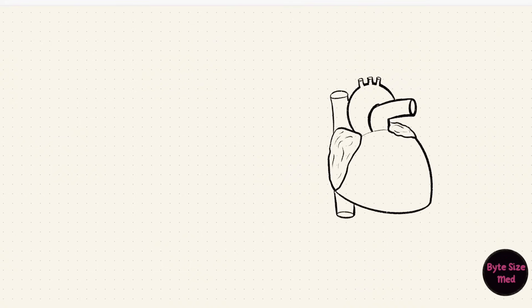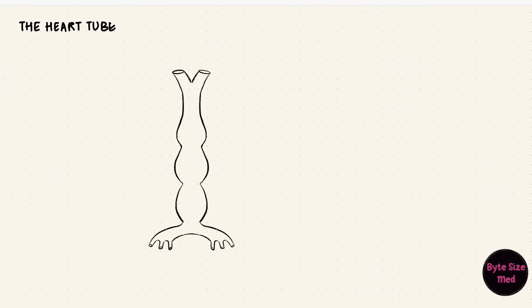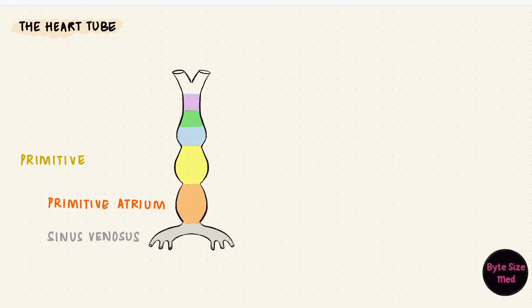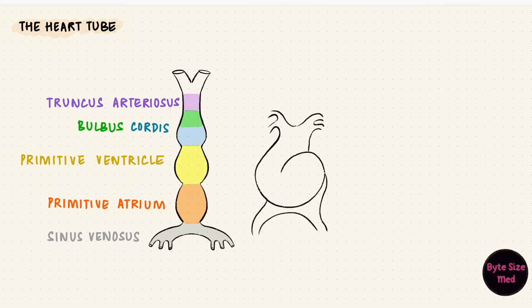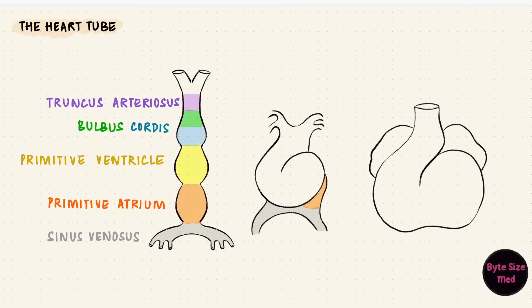Now we go back to the heart tube. The heart develops from the heart tube, which has dilations. We have the sinus venosus, then the primitive atrium, the primitive ventricle, the bulbus cordis, and the truncus arteriosus. The heart loops such that the atria come to lie behind, along with the sinus venosus.